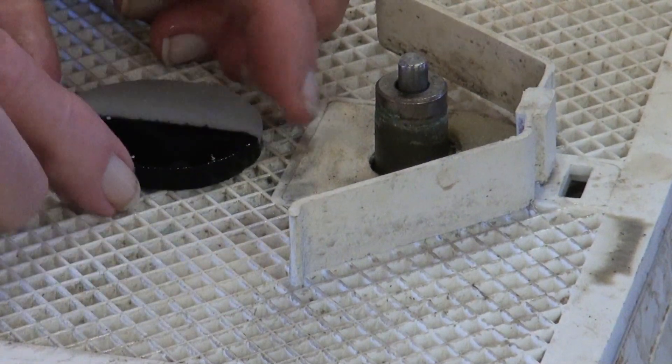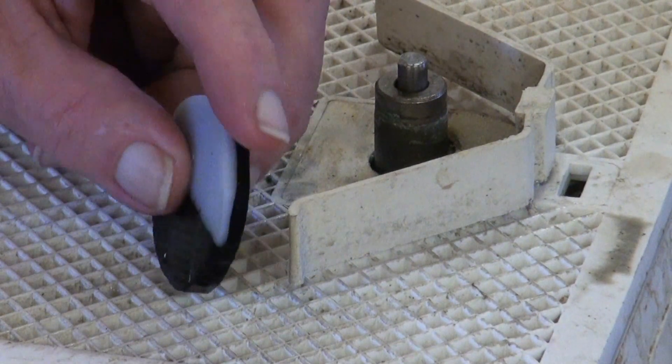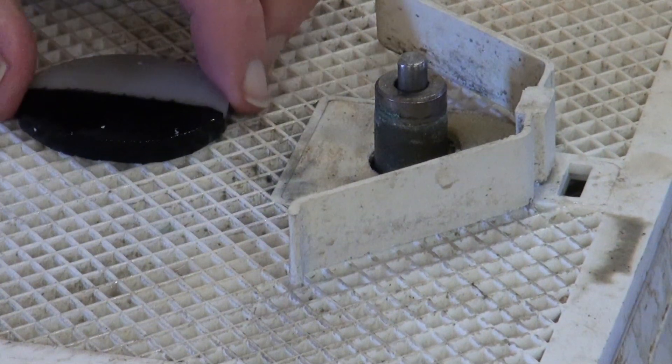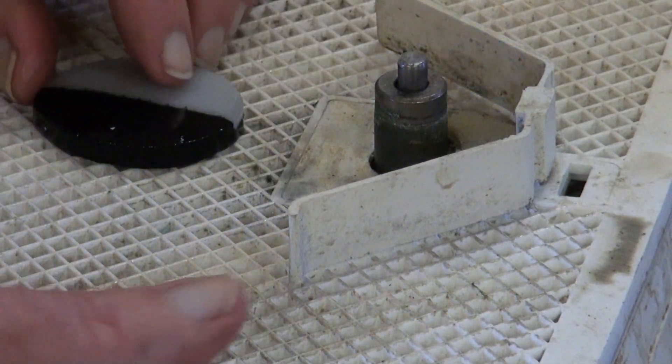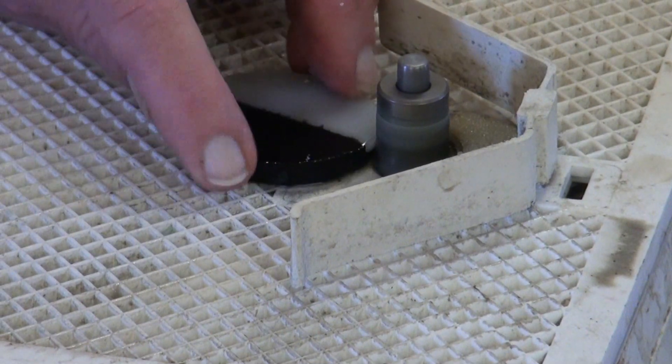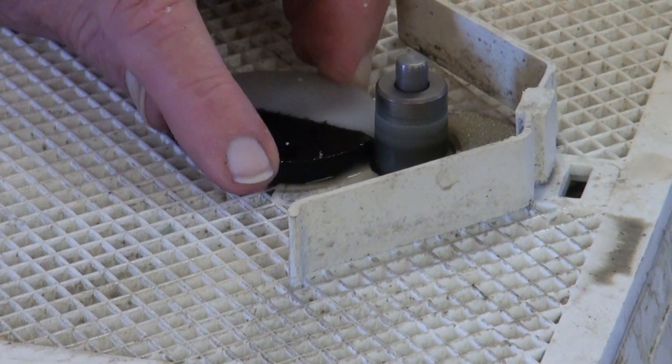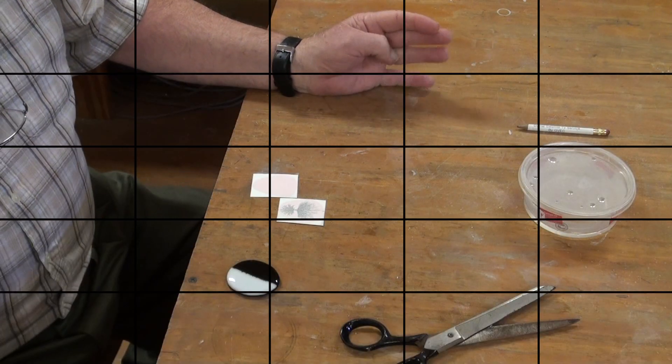We'll do a little bit more. And once we have it ground down, then we're ready to fire polish the edges. And after that we can finish off the rest of the pendant. So we'll just finish grinding it down a little bit.